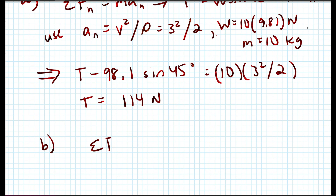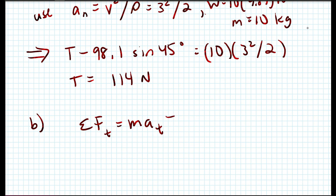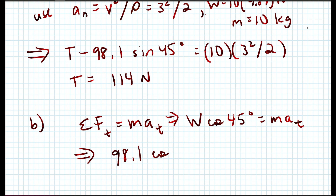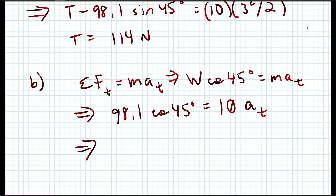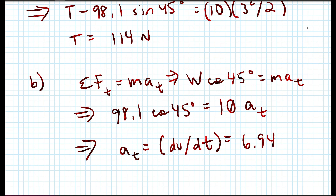For the tangential direction: ΣF_t = ma_t gives W cos45° = ma_t. Substituting: 98.1 cos45° = 10 a_t. Solving, a_t = dv/dt = 6.94 meters per second squared.